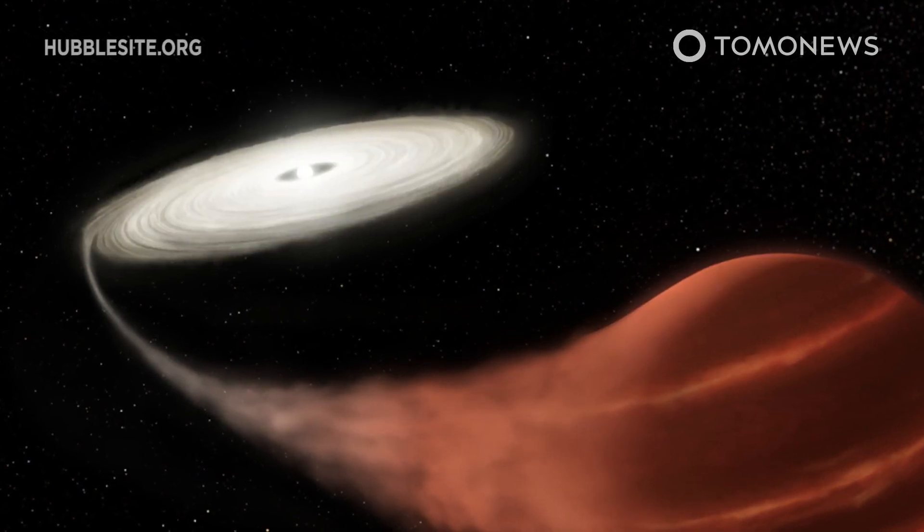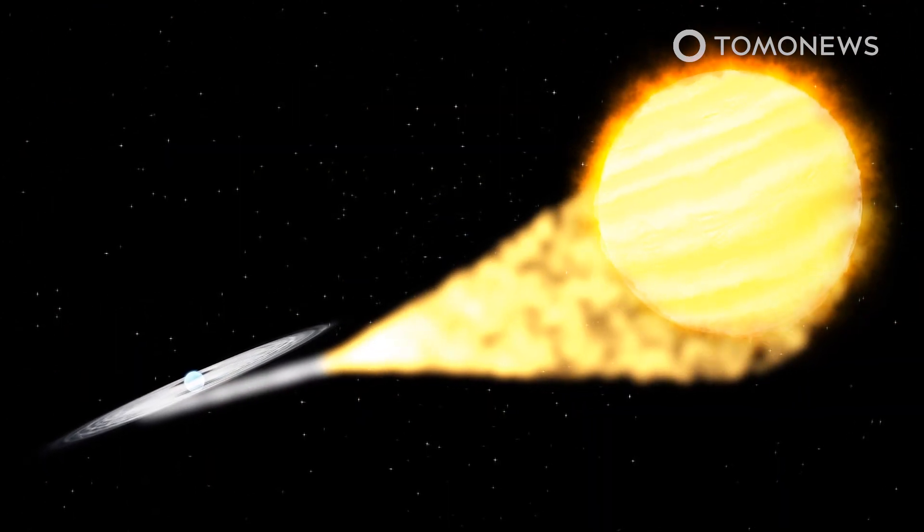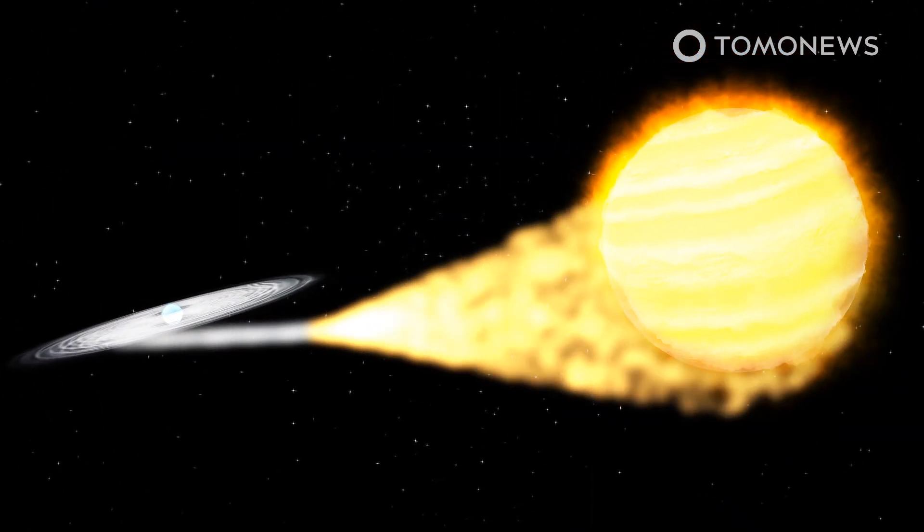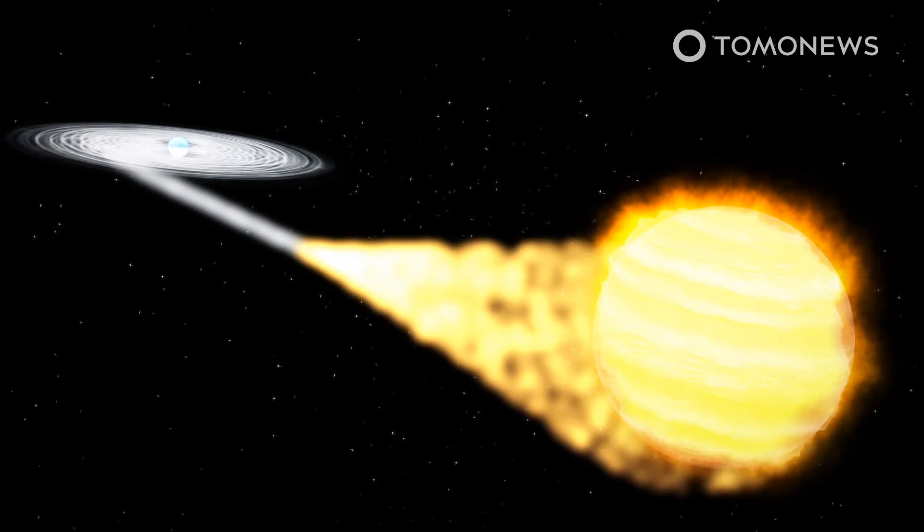NASA discovers a glittering vampire star in outer space. Astronomers have spotted a strange white dwarf star that devours its captive companion and blazes intense light in a rare event called a super outburst.